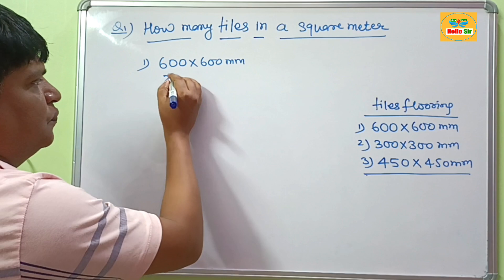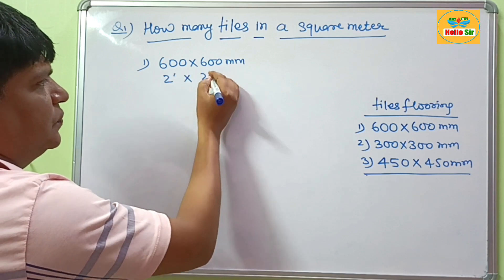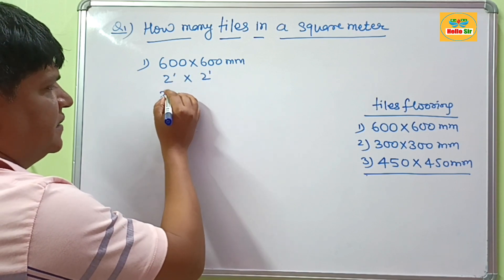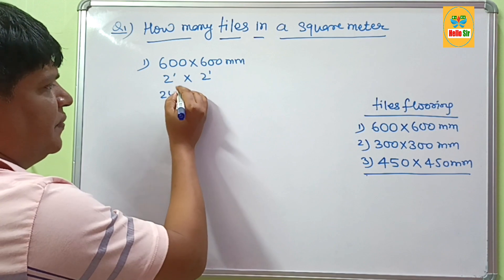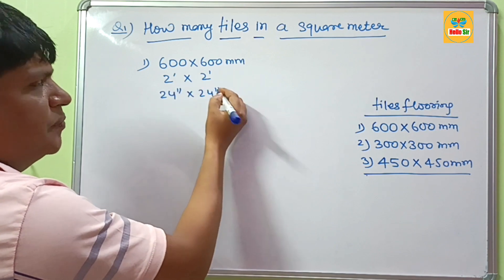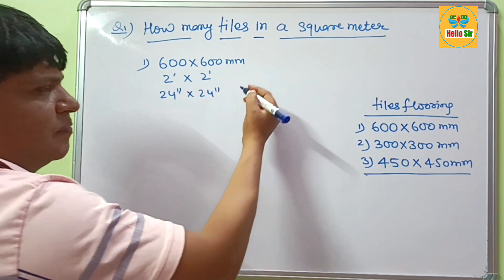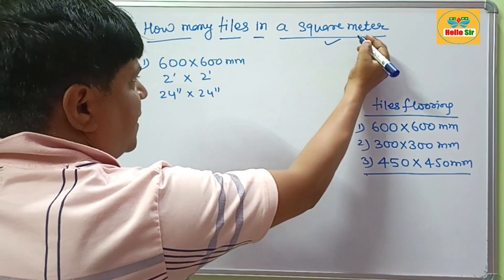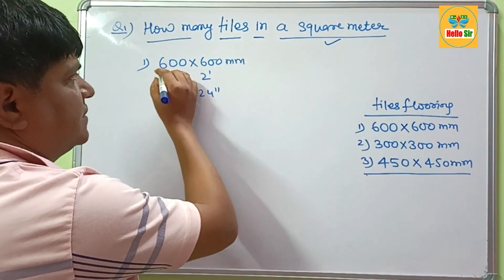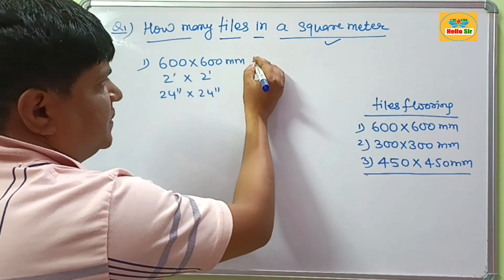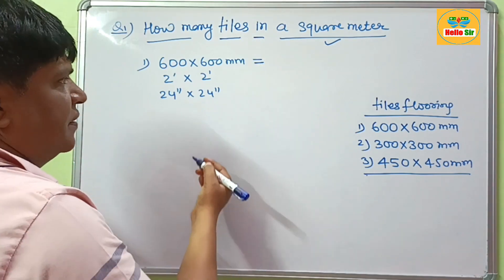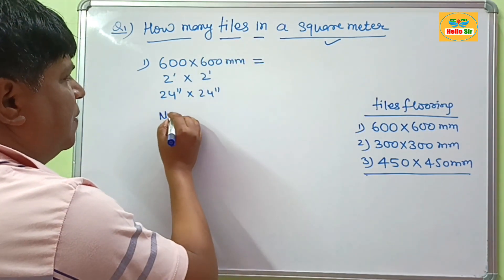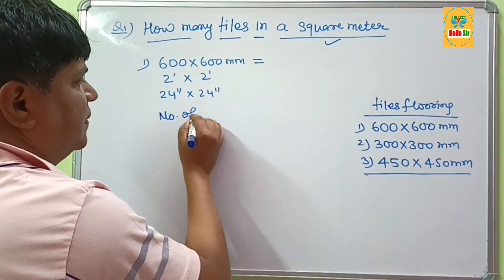600 x 600 mm means two feet into two feet, and in inches this will be 24 inches by 24 inches. But your tile flooring area is given in square meters, so your tile size should also be converted to square meters if you want to calculate the number of tiles.